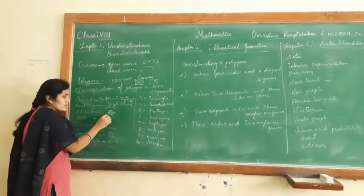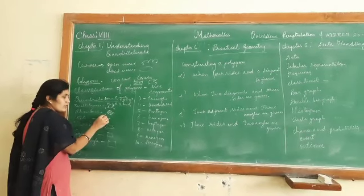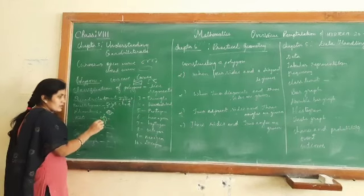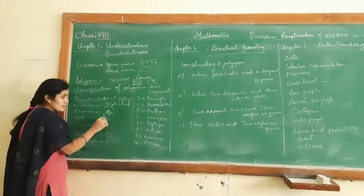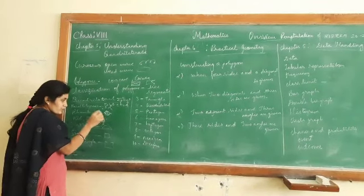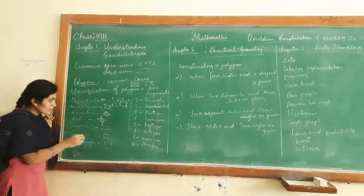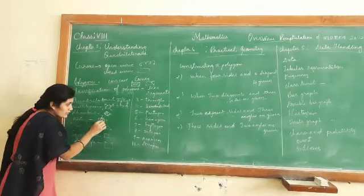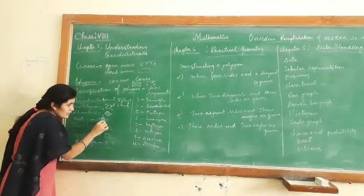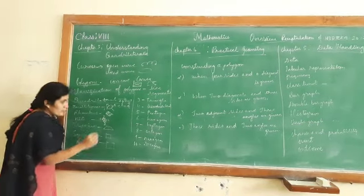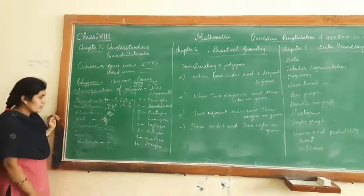In a kite, the pair of adjacent sides are equal and the diagonals intersect perpendicularly.